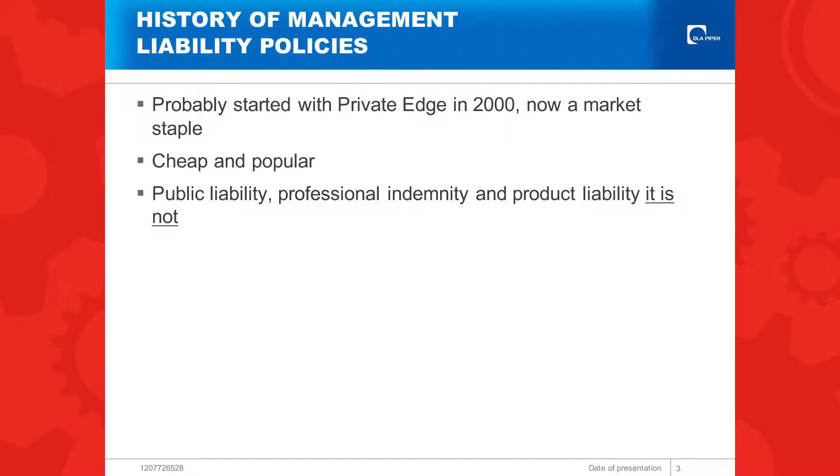Neil Shepard set me straight on this. We think the first management liability policy really came from AIG in 2000, with a product called Private Edge. I think there was an earlier management liability policy, but we think that was the first one. It's since evolved into a market staple — it's very cheap, it's very popular. But the theme of today is talking about cure or curse, depending on which paper you're looking at.